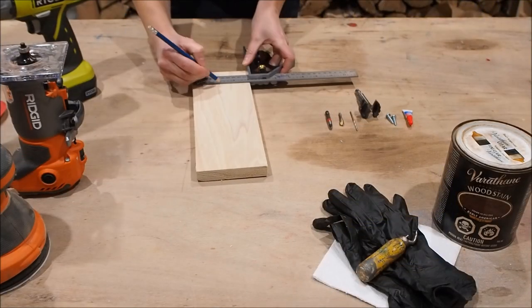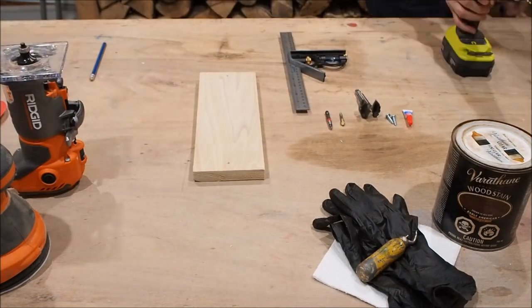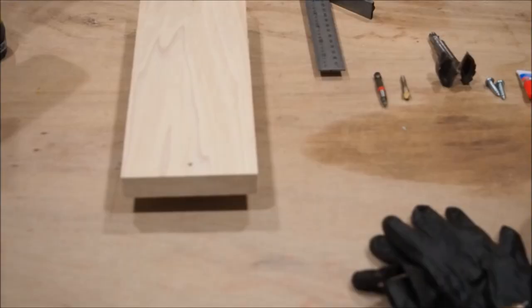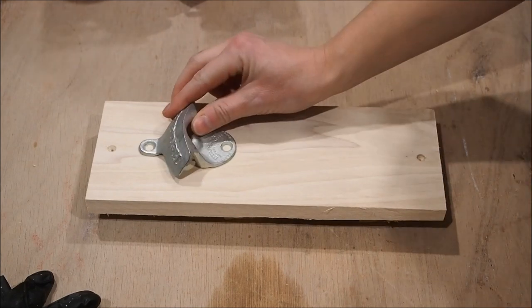I used a leftover piece of poplar measuring roughly 4 by 11 inches. I started by making a mark centered at about half an inch from the top and bottom of the plaque. I then drilled the pilot hole that I countersunk. These holes will be for mounting the plaque on the wall.